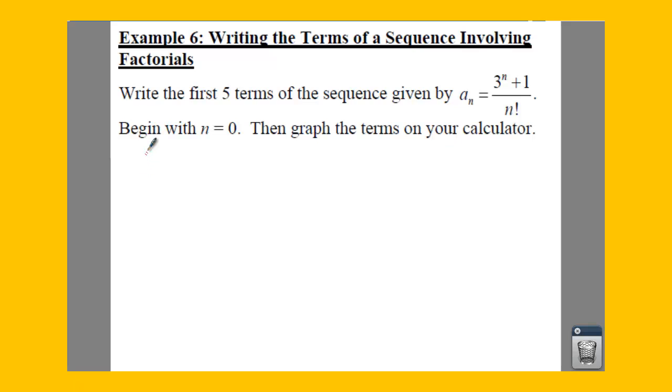So we need to find our first 5 terms of the sequence given by our expression. Begin with n equals 0, then graph the terms on your calculator. So we're going to say a sub 0, a sub 1, a sub 2, a sub 3, and a sub 4. Those are our first 5 terms because we're starting with a sub 0.